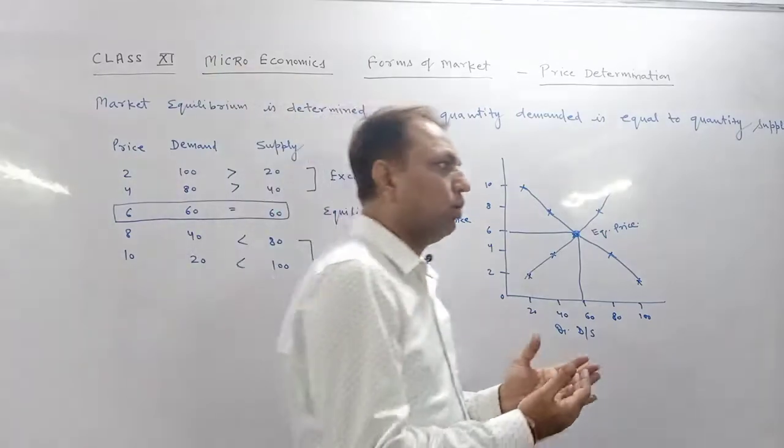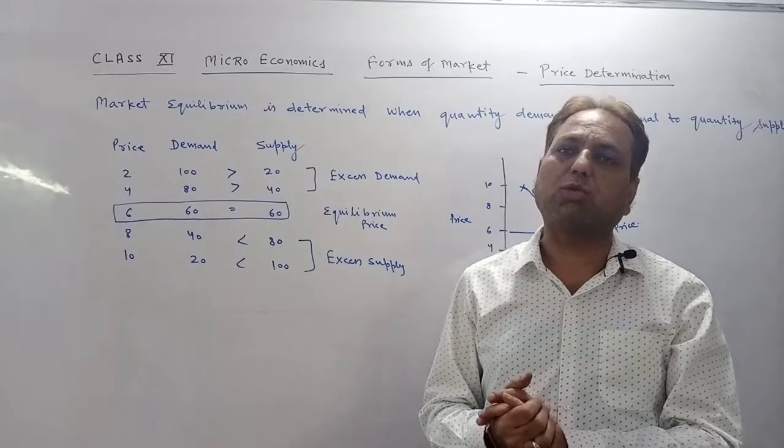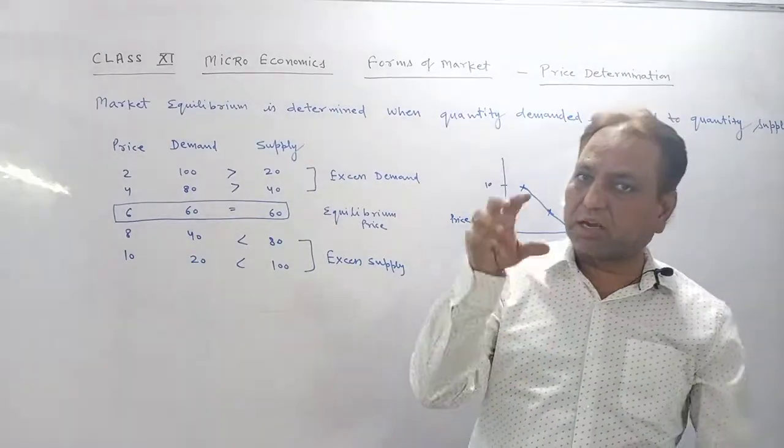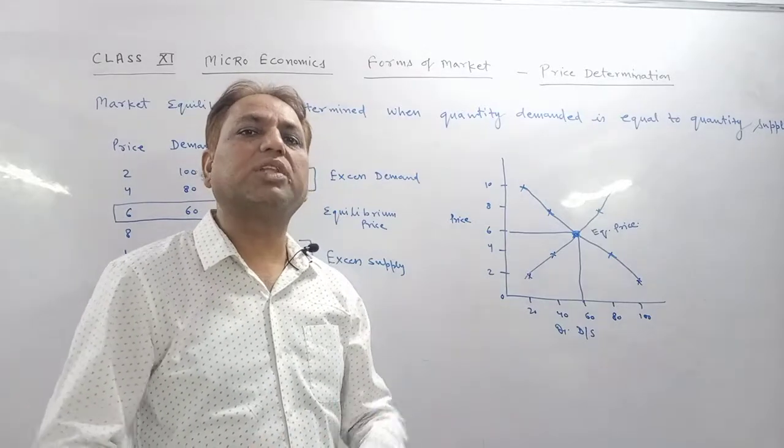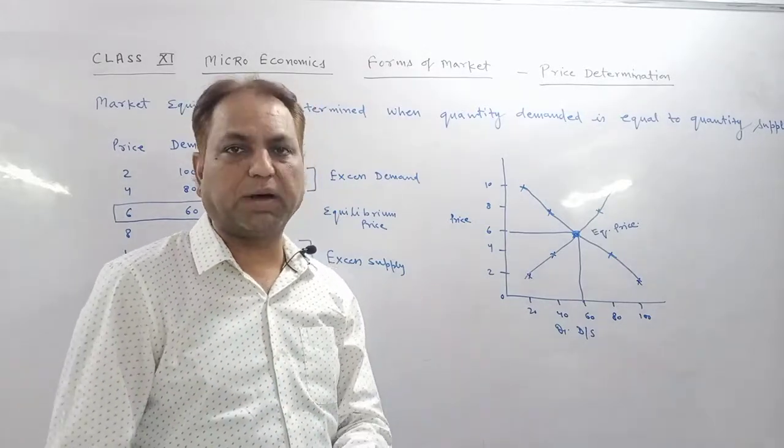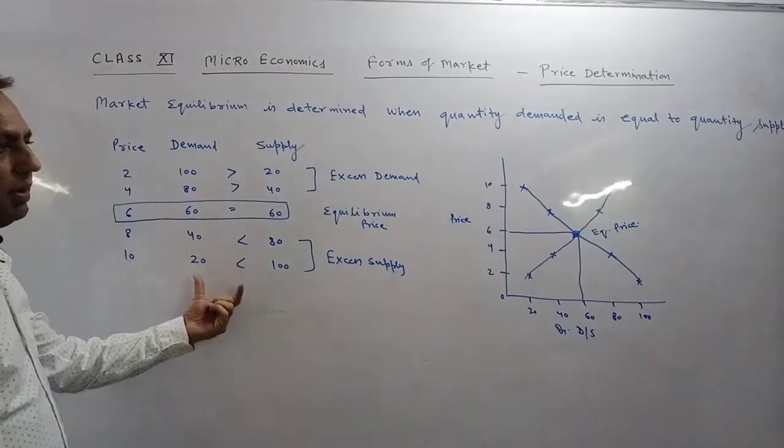They are willing to buy, they are willing to sell. Such situation is market equilibrium situation and the price determined at that situation is the equilibrium price. Means the price of perfect competition market. I'll explain it with the help of this table and diagram.